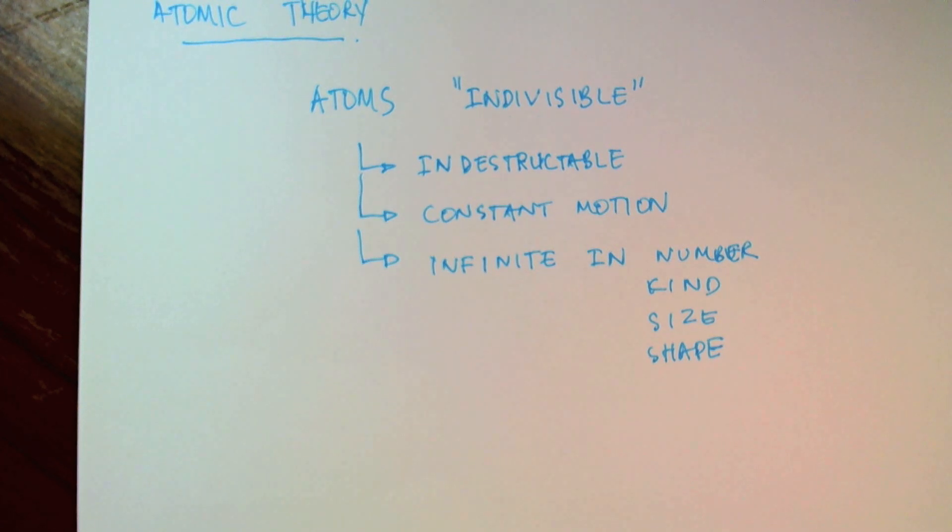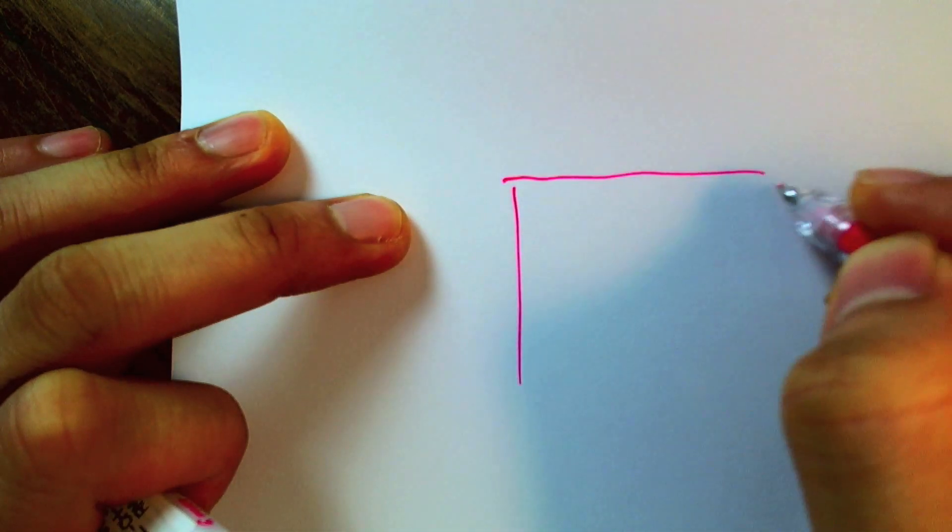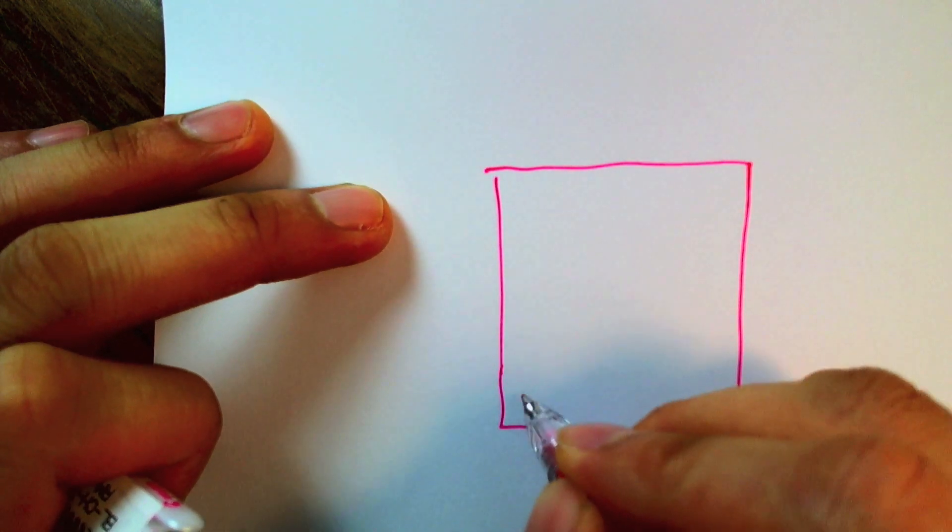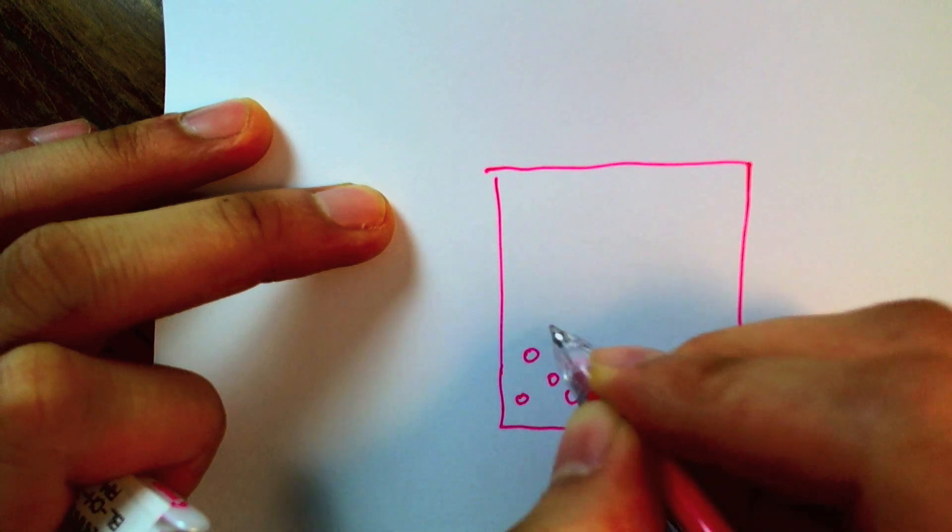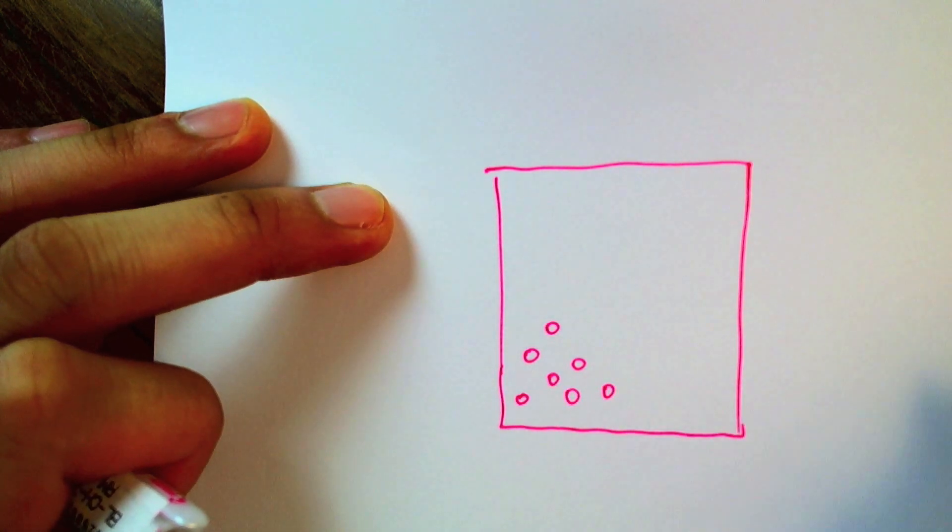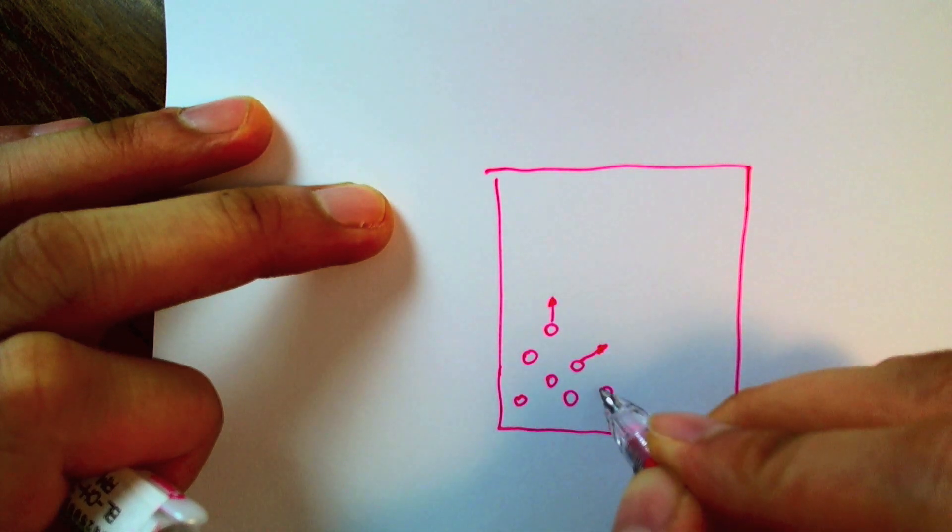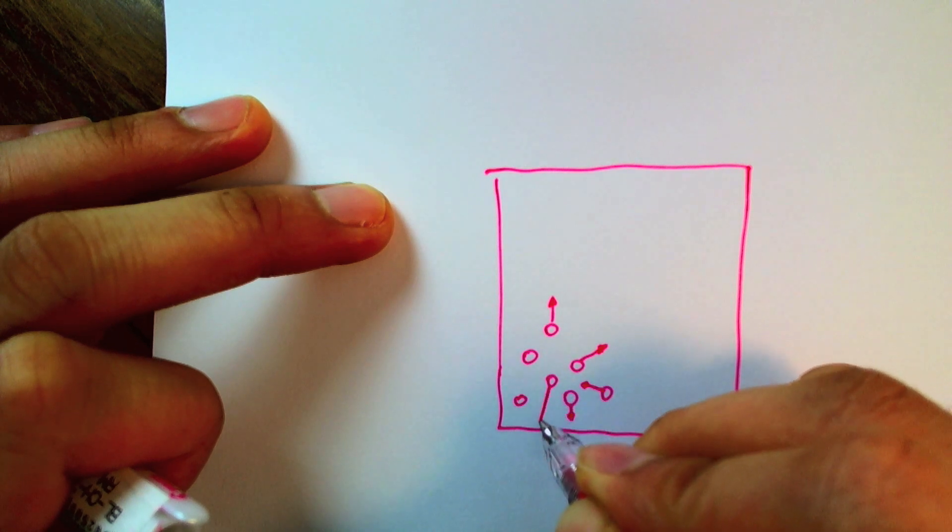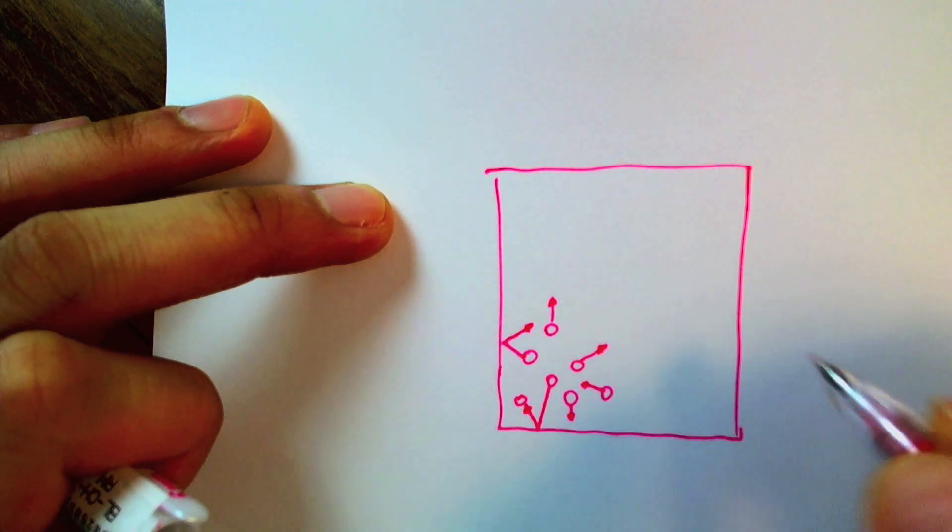Let's start by looking at a container that consists of these atoms in one corner. I'm going to draw six or seven of them. And these atoms, as Democritus said, are in constant random motion. They bounce into each other, bounce into the walls of the container, and bounce off again.